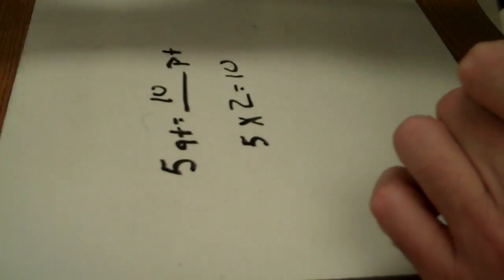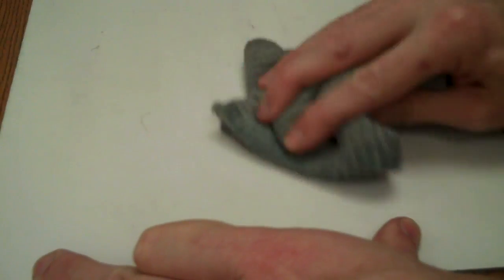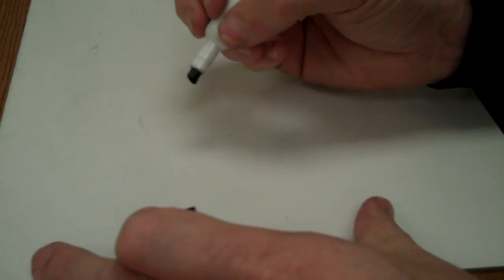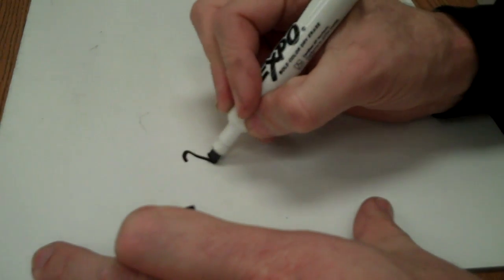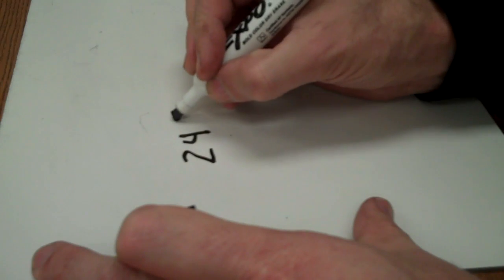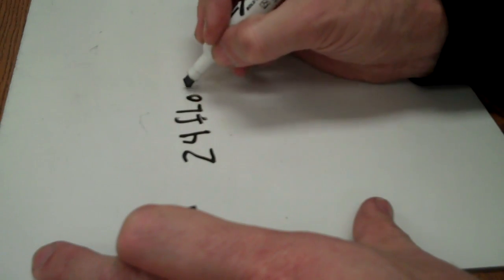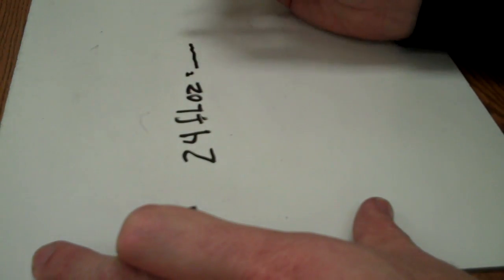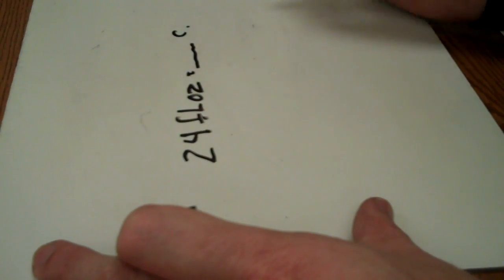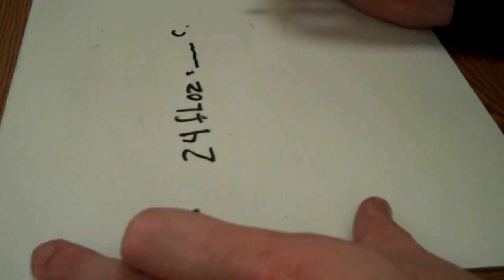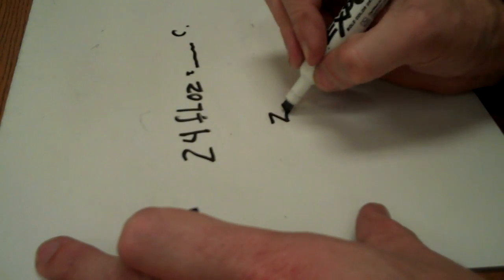Let's work another one real quick and see how it works out for you. Let's do 24 fluid ounces equals blank number of cups. Okay. Stop for a second. Write down what you're given. You're given 24.